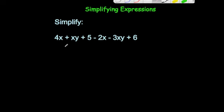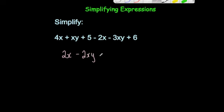Let's simplify this expression. Starting with our x's: 4x take away 2x would be 2x. Then our xy's: 1xy take away 3xy would give us minus 2xy. And 5 plus 6 is 11, so the answer is 2x subtract 2xy plus 11.